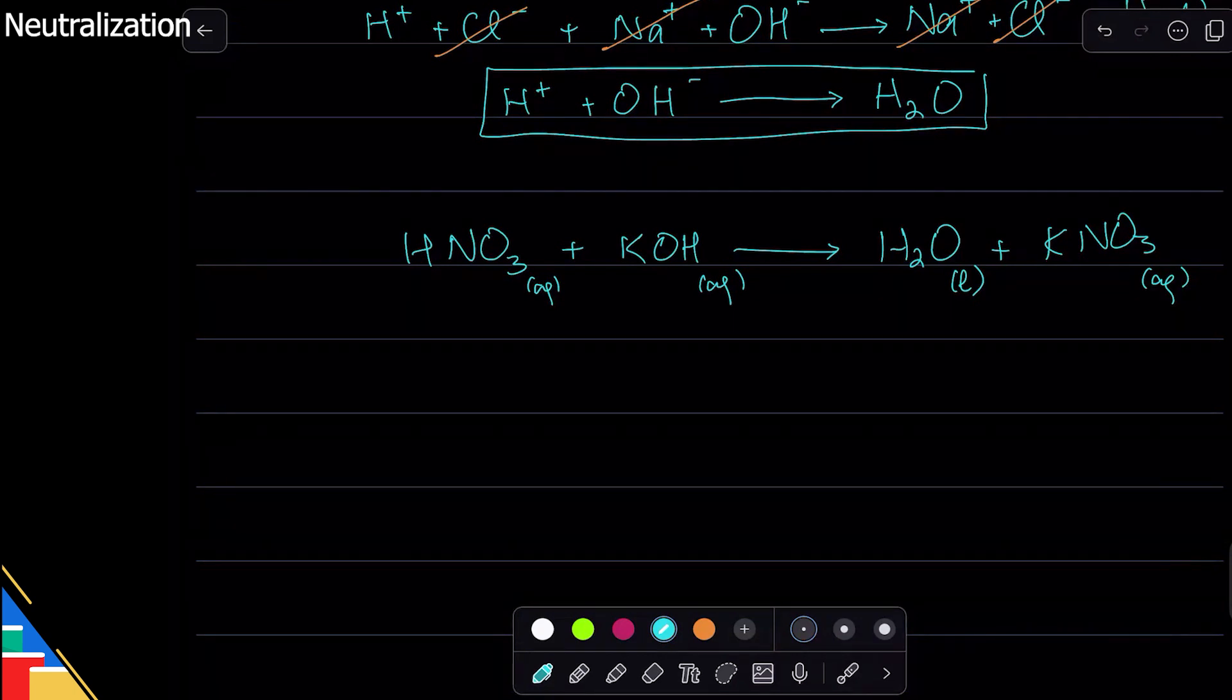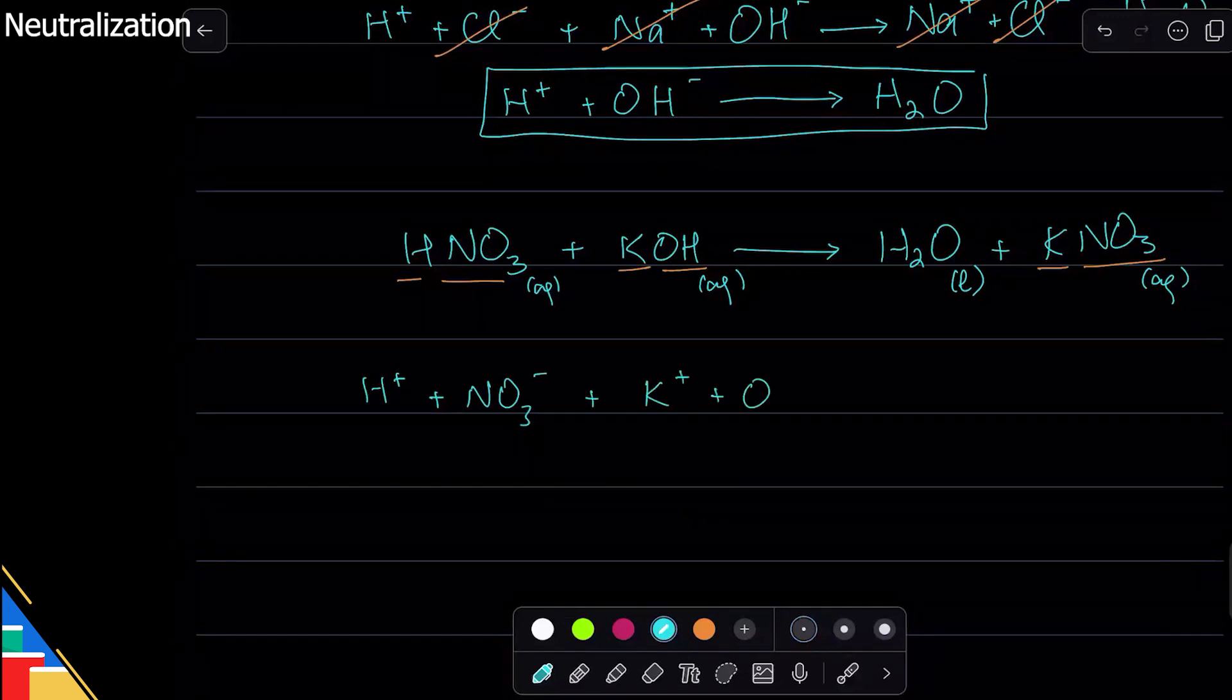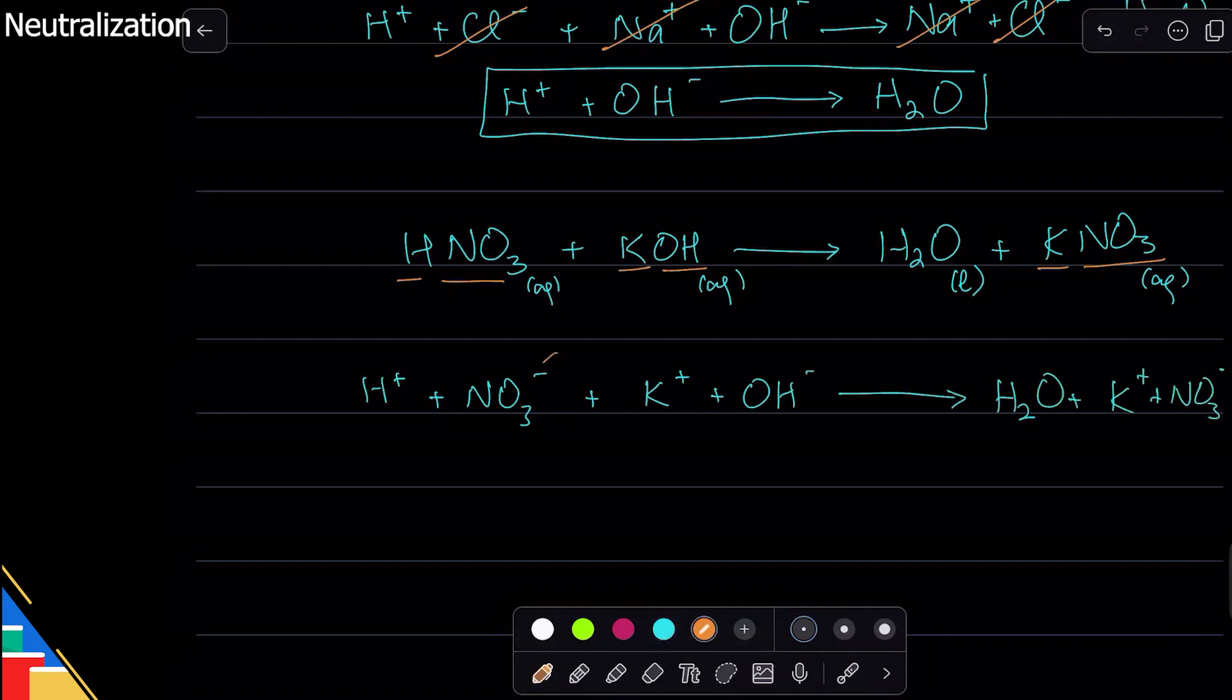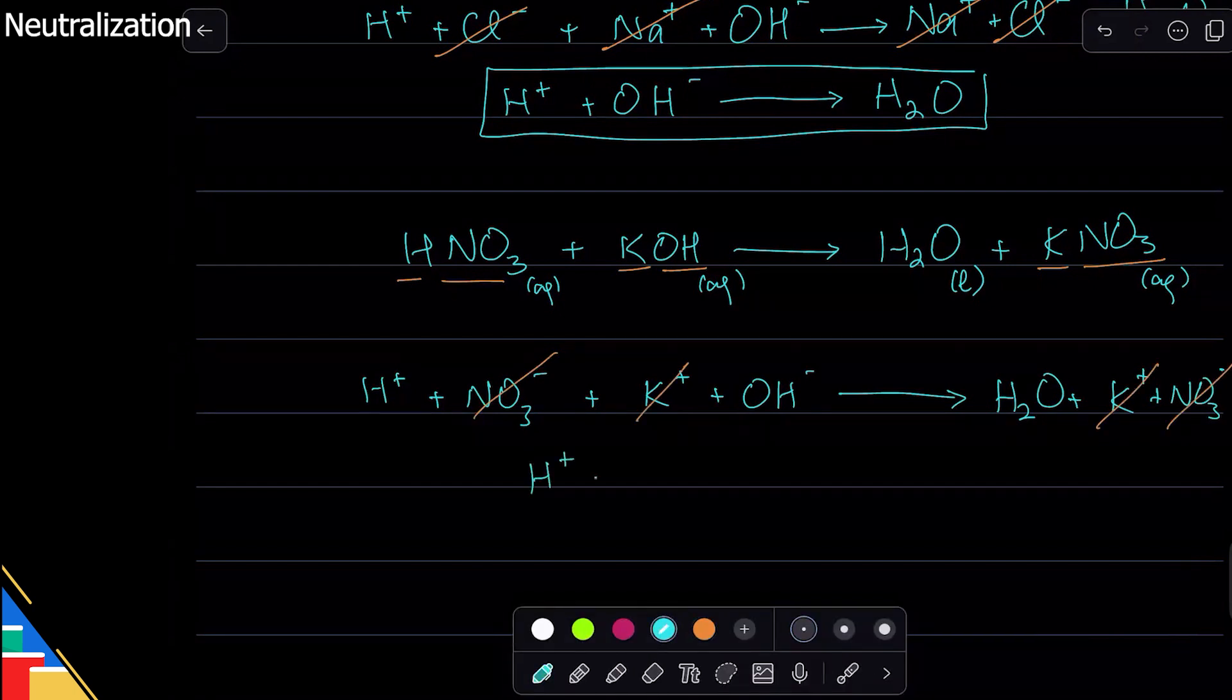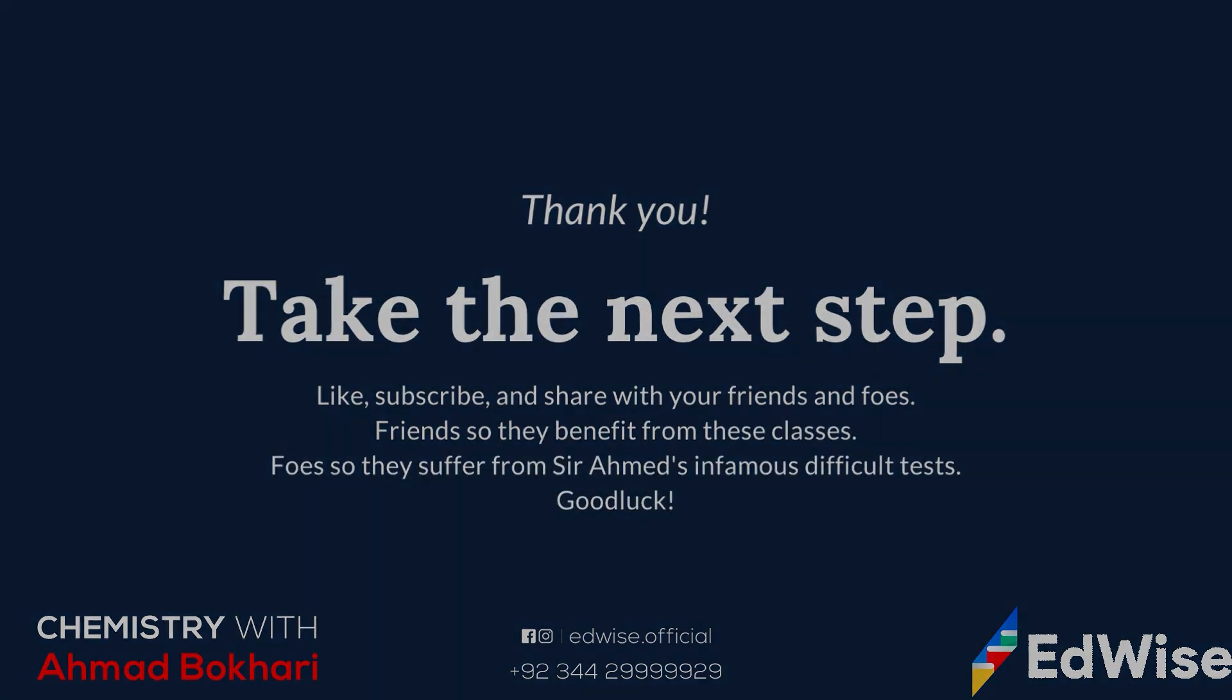Now write the complete method of writing the ionic equation. We have to ionize it, so we'll split everything up: H+ and NO3- plus K+ and OH- makes H2O plus K+ and NO3-. We'll cancel the ions that are common on both sides, and whatever we are left with, that is our ionic equation.